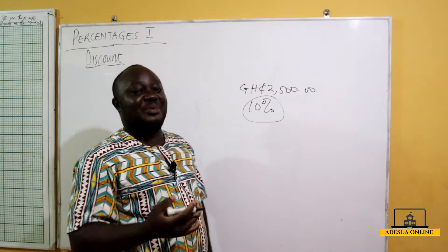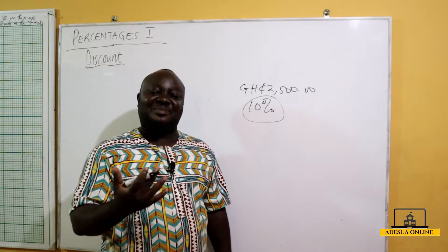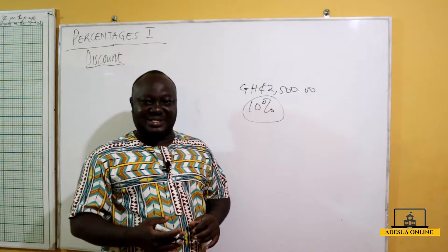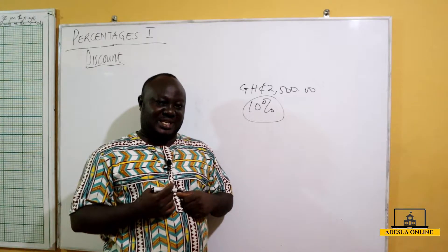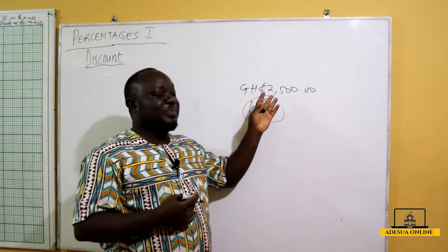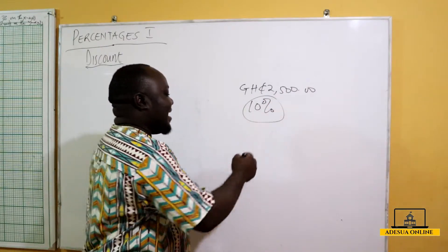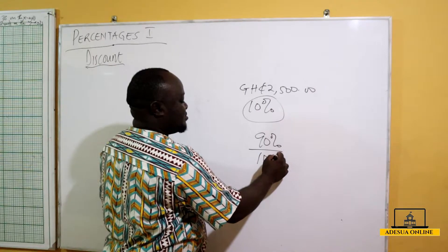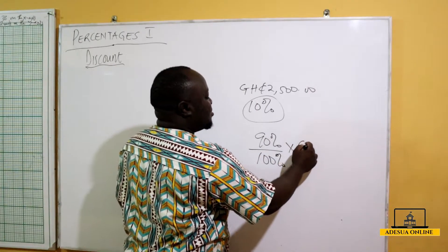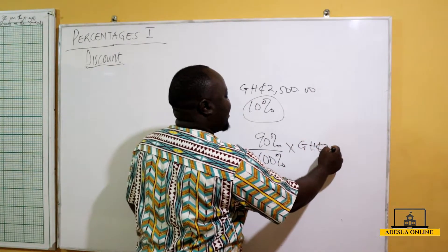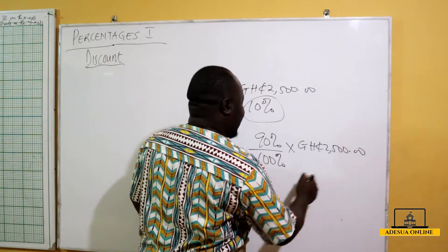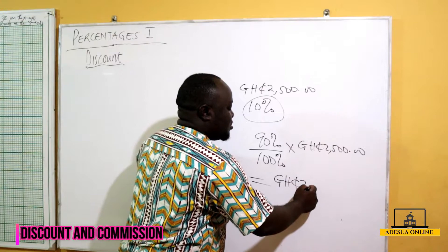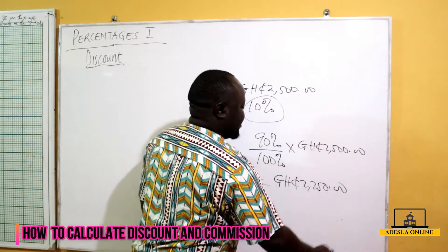Normally, if you are asked to calculate a 10% discount, it means you are going to pay 90% of the product price, because 10% has been taken away. So to find 90% of this product: 90 over 100 times 2500 Ghana cedis, which gives us 2250 Ghana cedis.